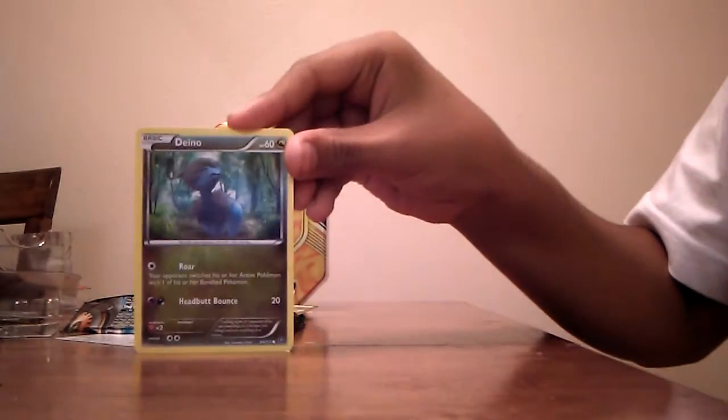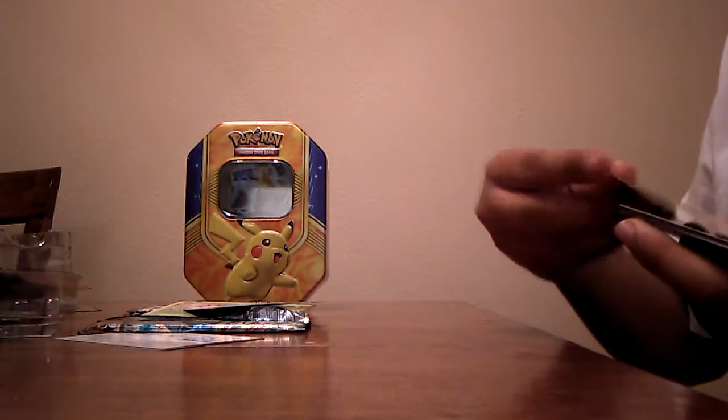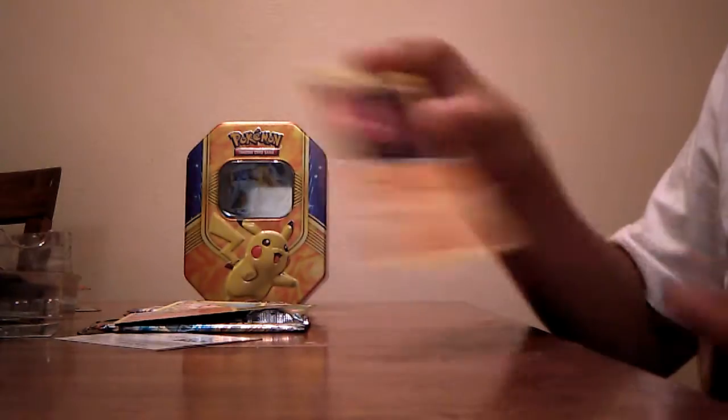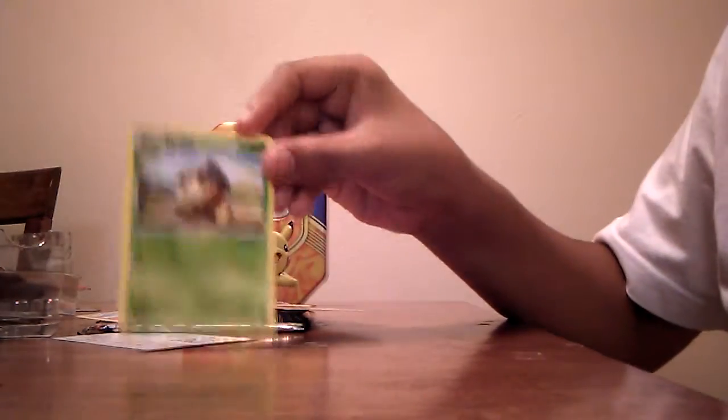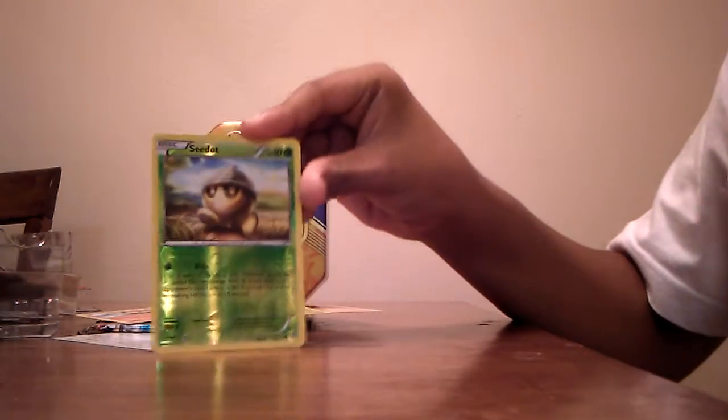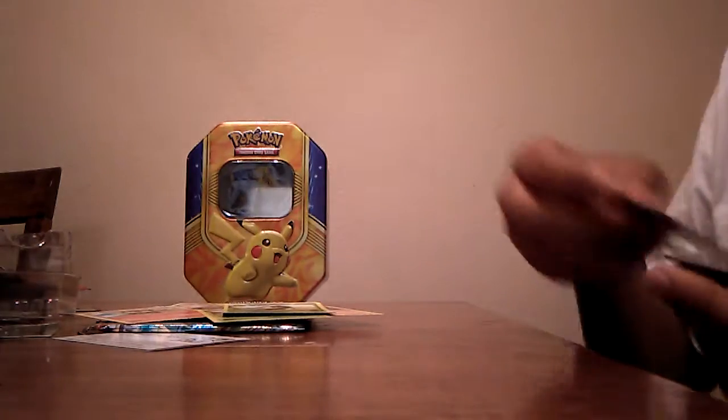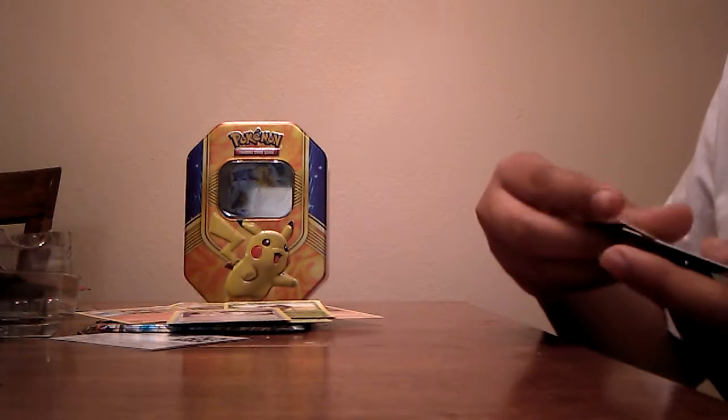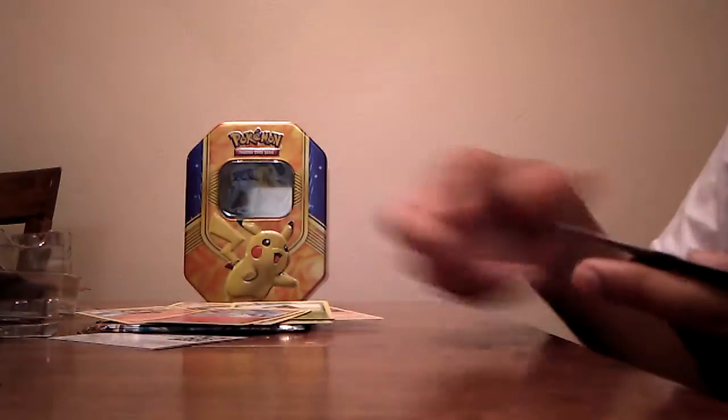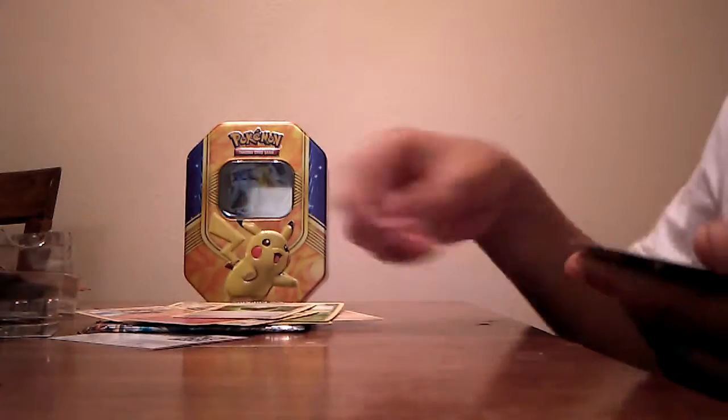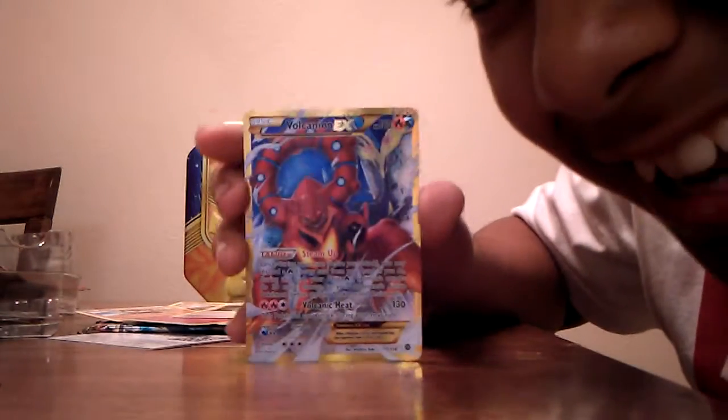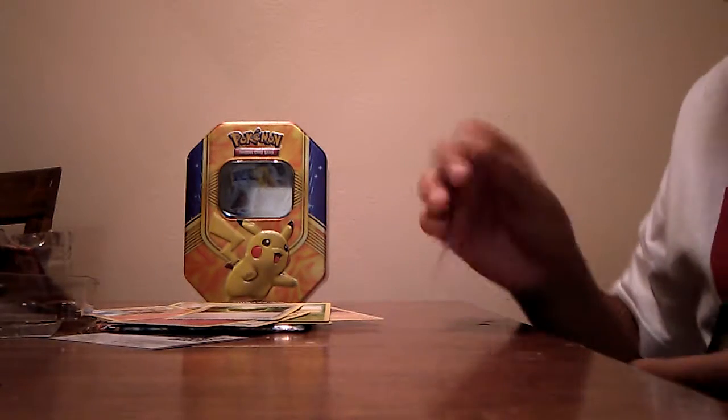Hoppip, Beldum, Nosepass, Seedot, Carbink spirit link - that's good, and I actually have a shiny Carbink. Klefki, Greedy Dice, and then, none other than Volcanion EX! I have two now, two!